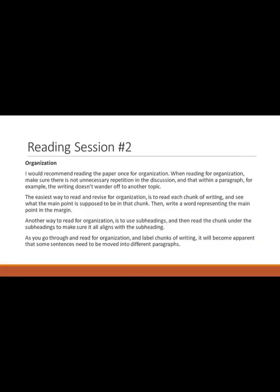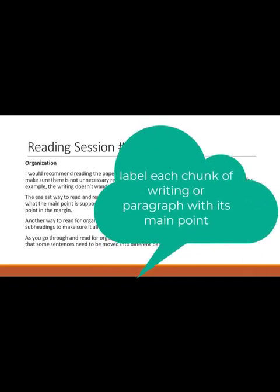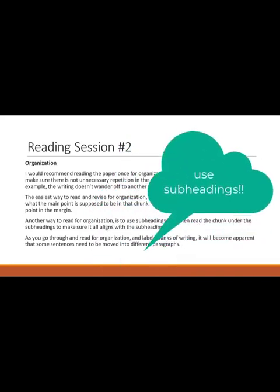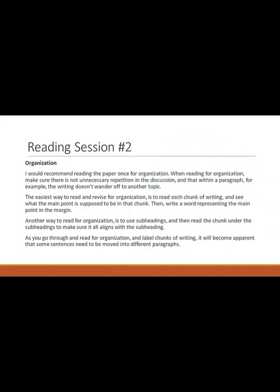In reading session number two, look for organization. Read the paper once for organization, making sure there is no unnecessary repetition and that within a paragraph the writing doesn't wander off to another topic. Read each chunk of writing, identify the main point, and write a word representing it in the margin. You can also use subheadings and check that the content aligns with them. Some sentences may need to be moved into different paragraphs.